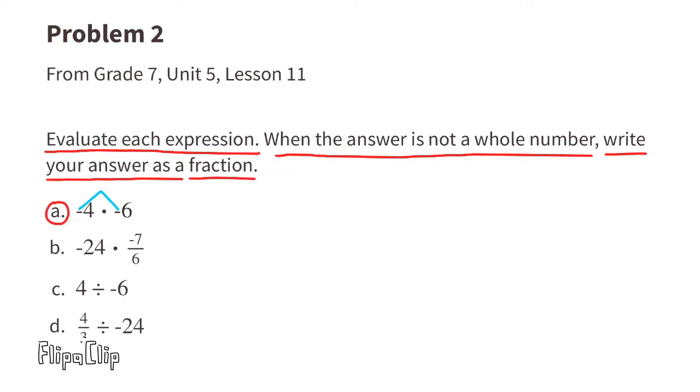We know that a negative times a negative is a positive, and 4 times 6 is 24. So negative 4 times negative 6 equals a positive 24.